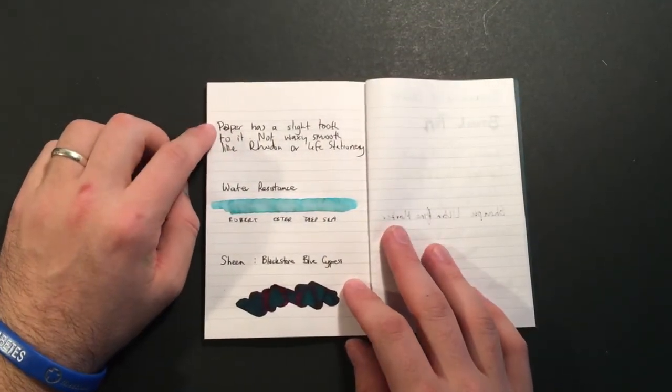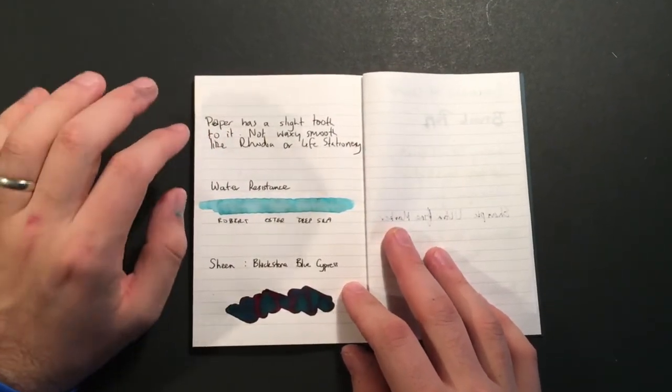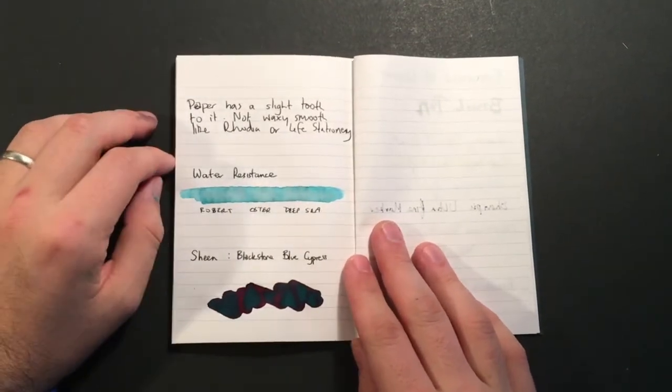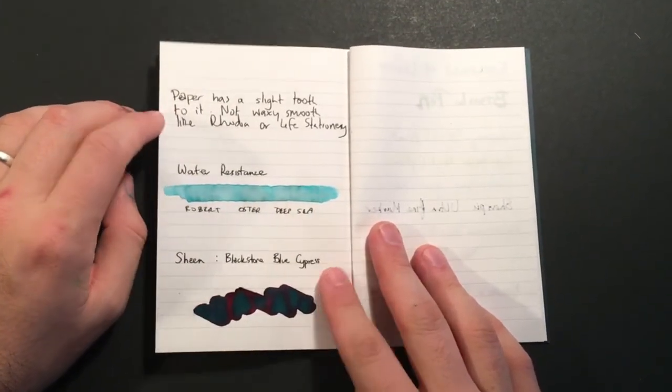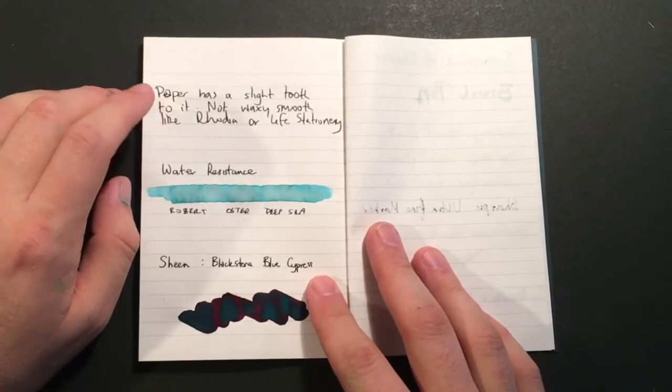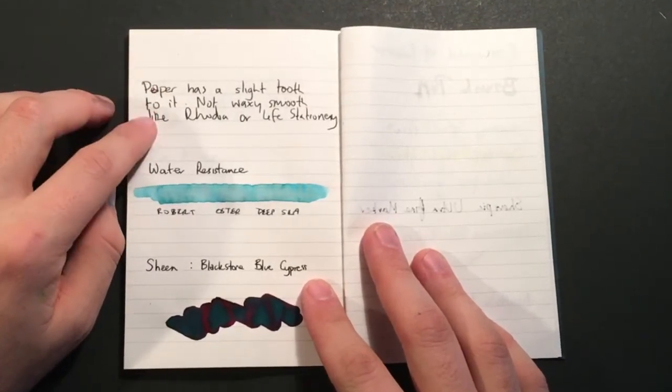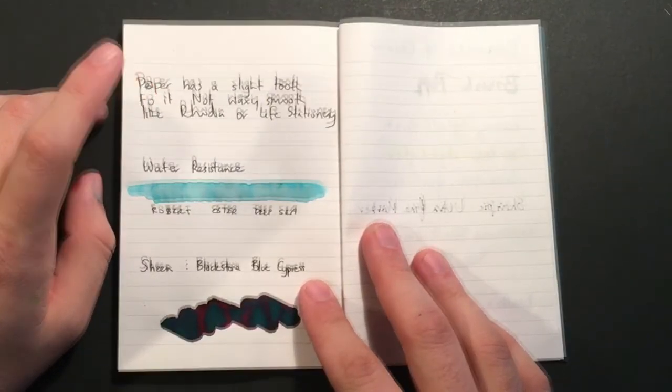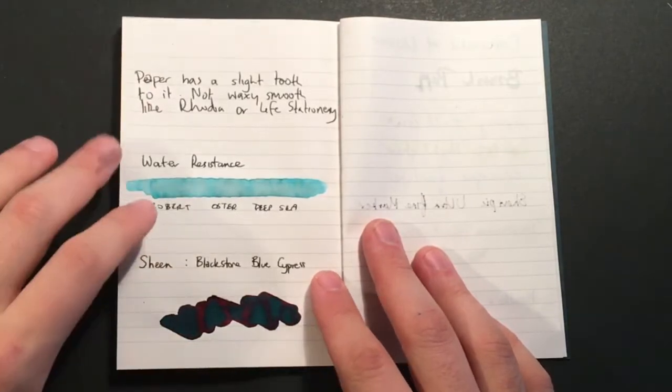I've noted here the paper has a slight tooth to it. It's not as waxy smooth as, say, Rhodia or Clairefontaine or anything like that, and it's certainly not as smooth as the Life Stationery Symphony Notebook which I reviewed previous to this.